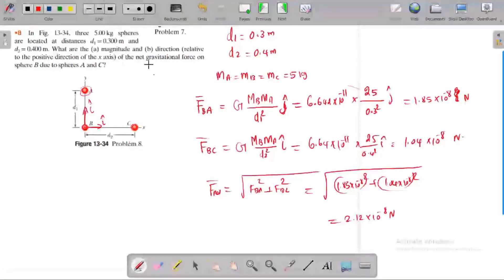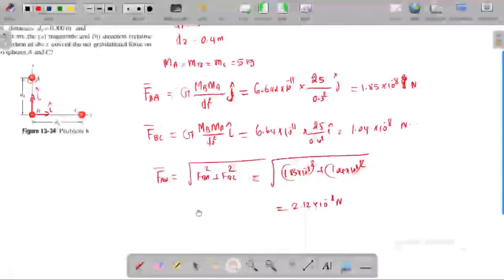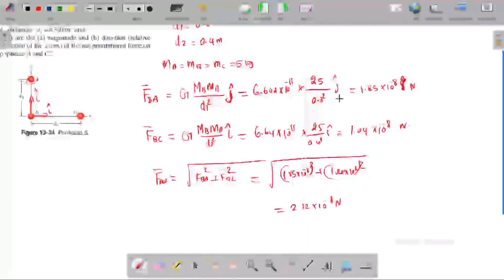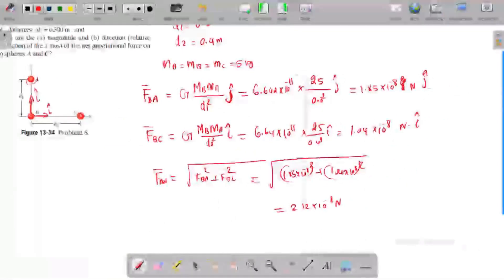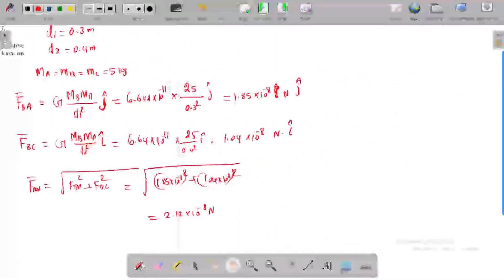Then we need the direction of the resultant force. We need j-hat to be vertical and i-hat to be horizontal. So, how do you find the direction?